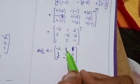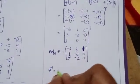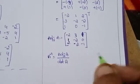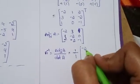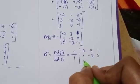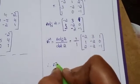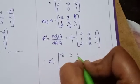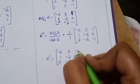Now A inverse equals adjoint A divided by det(A). Since det(A) equals 1, A inverse equals 1 by 1 times the adjoint matrix. Therefore A inverse equals: minus 2, 3, 1 in row 1; 1, minus 2, 0 in row 2; 2, minus 2, minus 1 in row 3. This is the required solution.